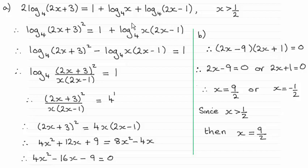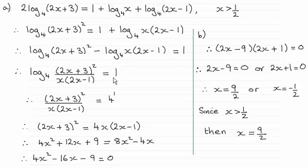So I subtract this term from both sides to bring the log terms together. Then I use the division rule, since you've got a subtraction. You should be familiar with this rule — it becomes the log in base 4 of 2x plus 3, all squared, all divided by x times 2x minus 1. So I've reduced this now down to two terms: one term on one side of the equals and the other term on the other side.